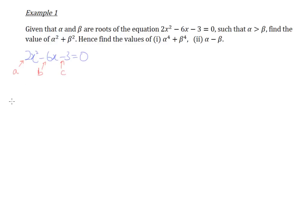Based on what we discussed earlier, the two roots being alpha and beta, we know that the sum of roots, which is alpha plus beta, is equal to negative B over A. In this particular case, that is negative of negative 6 over 2, which gives us positive 3. So the sum of roots is 3.